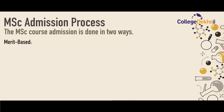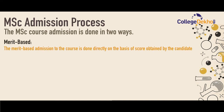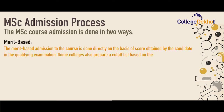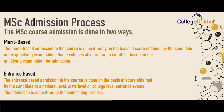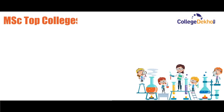Let's know the MSc admission process. The MSc course admission is done in two ways. In merit-based admission, the admission is done directly on the basis of the score obtained by the candidate in the qualifying examination; some colleges also prepare a cutoff list. Entrance-based admission is done on the basis of scores at the national, state, or college level entrance exams, and admission is done through the counseling process.